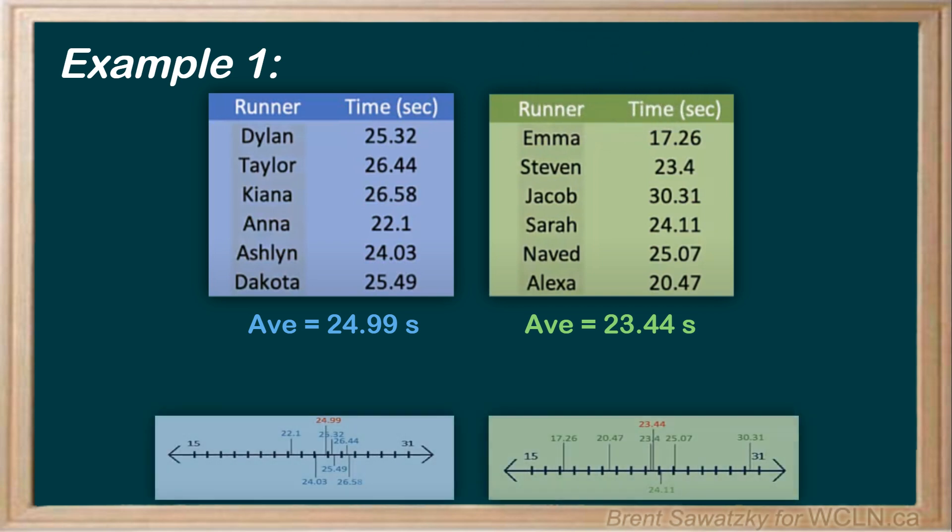Let's look at a number line to visualize these results and see if there's more to this data. When we look at the results, we see that the green team may have had the better overall average, but their times vary a lot among their team members. So it's hard to conclude that they had a strong team performance when some of their runners were probably close to last place in the race, and others really carried the team by going really fast.